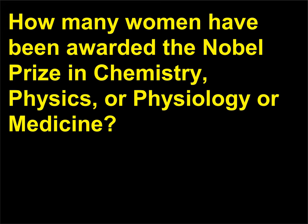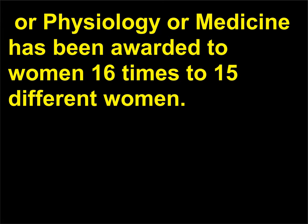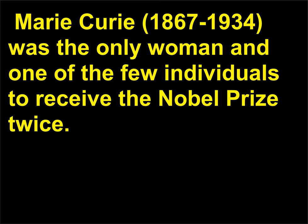How many women have been awarded the Nobel Prize in Chemistry, Physics, or Physiology or Medicine? Since 1901, the Nobel Prize in Chemistry, Physics, or Physiology or Medicine has been awarded to women 16 times to 15 different women. Marie Curie, 1867–1934, was the only woman and one of the few individuals to receive the Nobel Prize twice.